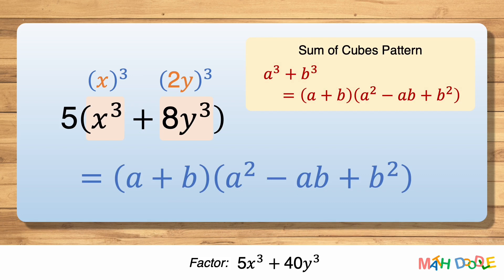So by comparing the binomial with the left side of the pattern, let's find the values of a and b. a is x and b is 2y. Now let's substitute these for a and b in the right side of the pattern and be sure to keep 5.